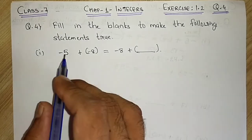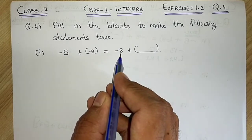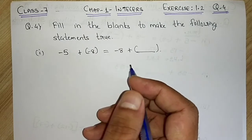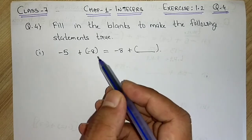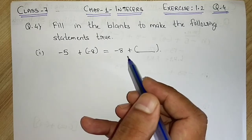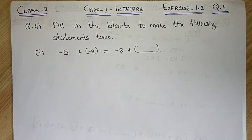The first blank is: minus 5 plus minus 8 is equal to minus 8 plus ___ (blank). Students, what number do we have to put here so that LHS becomes equal to RHS? If you look carefully, it is the same thing I explained in the introductory lecture of Exercise 1.2.